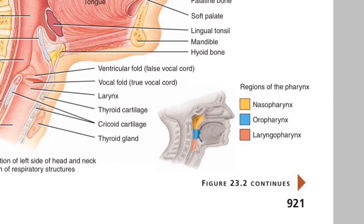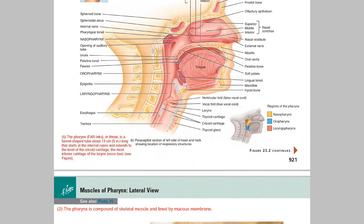For example, the yellow color is used for nasopharynx, blue color for the oropharynx, and the orange color for the laryngopharynx.